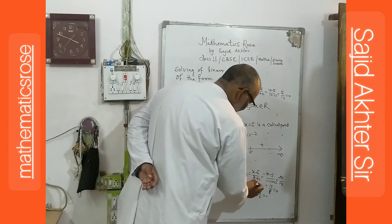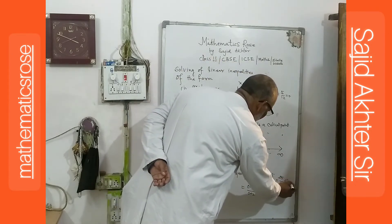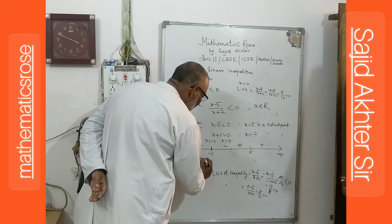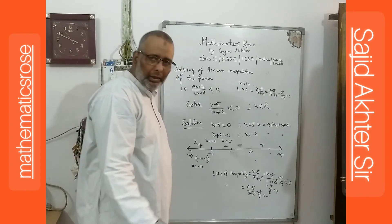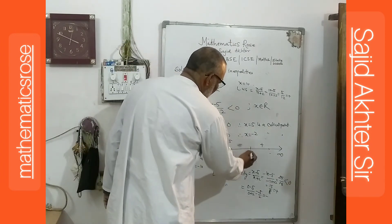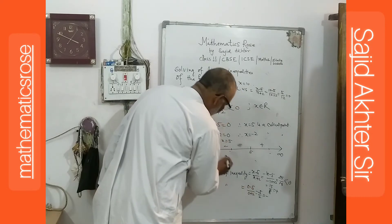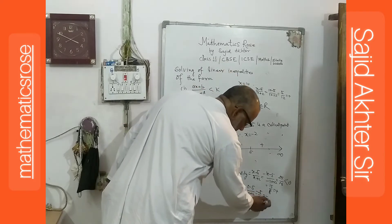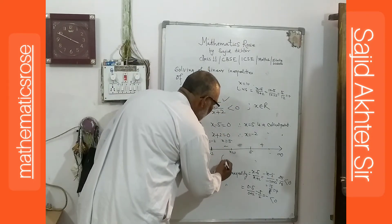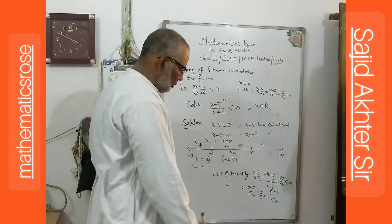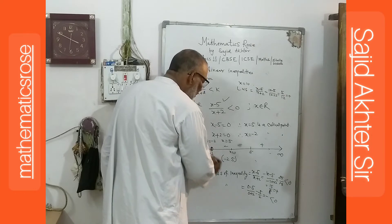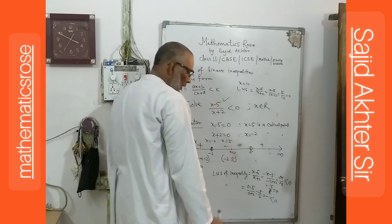There are three intervals. The first is positive — but the inequality requires less than 0, so we do not take the interval minus infinity to minus 2. The second interval, minus 2 to 5, gives a negative value, and negative is less than 0, so it satisfies the inequality. Both minus 2 and 5 are excluded, so it is an open interval. All real numbers between minus 2 and 5 are the solution.